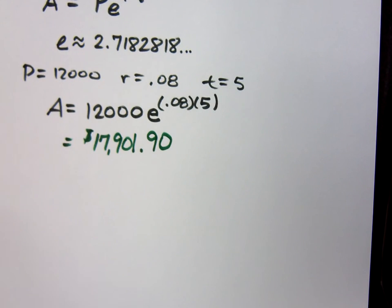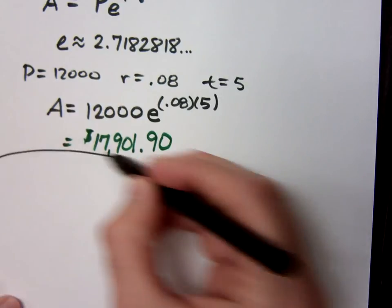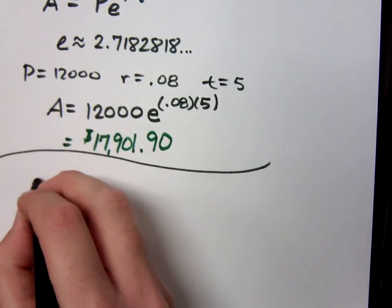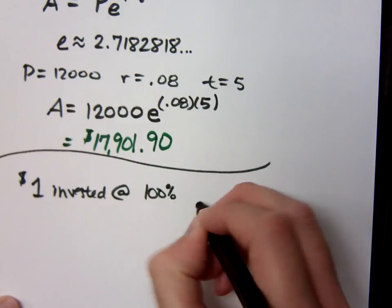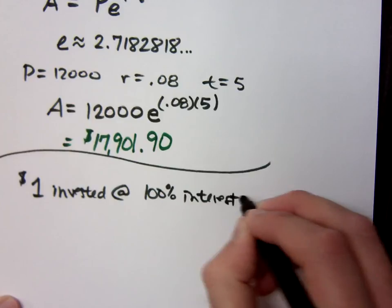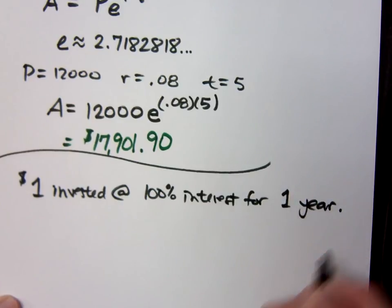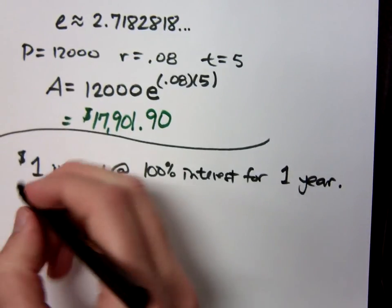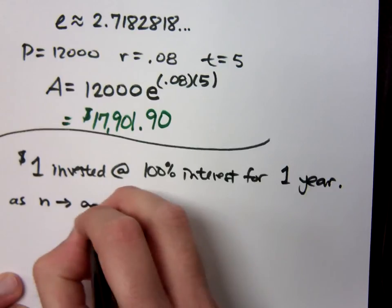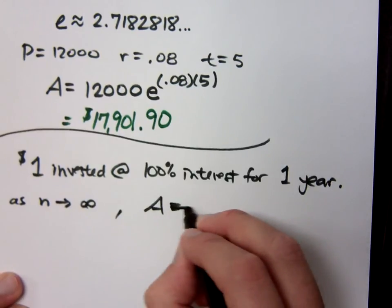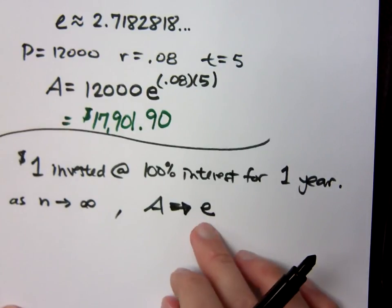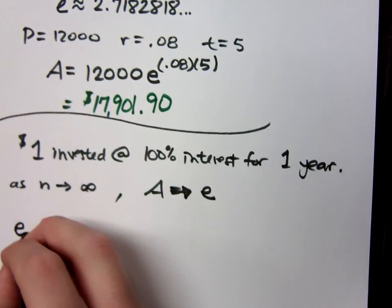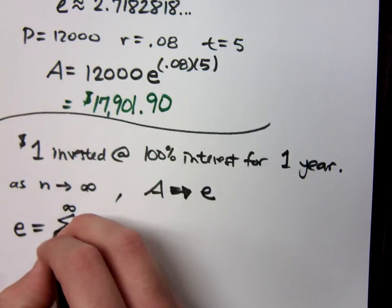Let's throw a few things out there for you. The way we come up with e, just to have a little bit more explanation for that guy. If you took one dollar, invested at 100% interest for one year. A dollar at 100% interest for one year. As the number of compounding goes to infinity, the amount of money that you would have would approach e. You do that formula, and you keep typing in those numbers, you make n get larger and larger, and it's going to approach e, and you're going to see that.